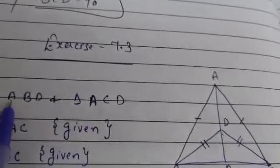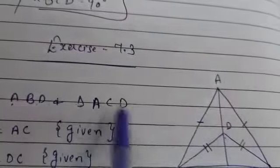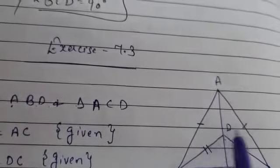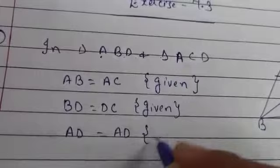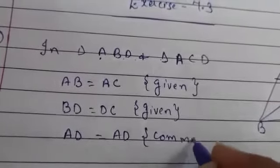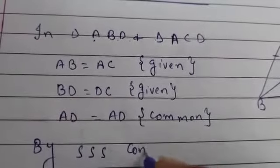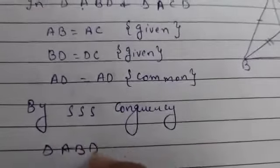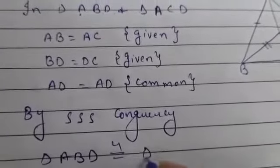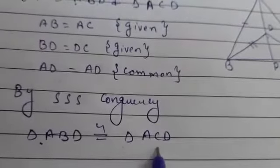We have taken triangle ABD and triangle ACD. AD is common in both, so we can write AD is equal to AD — that is common. So by SSS congruency, triangle ABD is congruent to triangle ACD. So these both triangles are congruent.